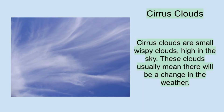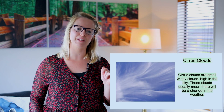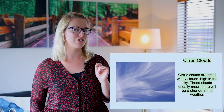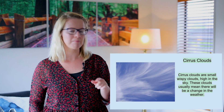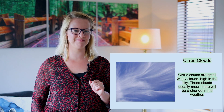Then we have cirrus clouds. These ones look so nice and graceful up in the sky. Cirrus clouds are small, wispy clouds high in the sky. These clouds usually mean there will be a change in the weather. That's good to know — I never knew that before.